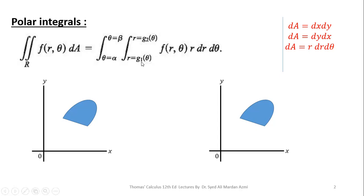The limits of R are g1(theta) to g2(theta), and limits of theta are alpha to beta. Since R is our inner variable, its limits may be constant or variable, but theta is our outer variable so limits of theta are always constants.